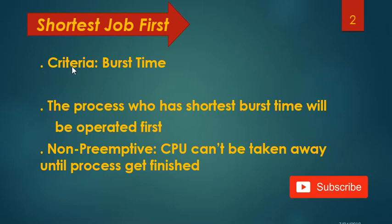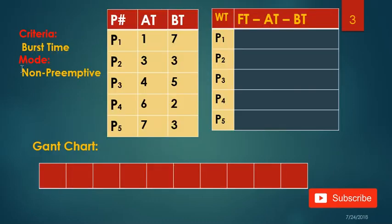The criteria for shortest job first non-preemptive scheduling algorithm is burst time, which means the process having the least burst time will be operated first. Non-preemptive means the CPU cannot be taken away until the process gets finished. So burst time is the most important thing in this technique.